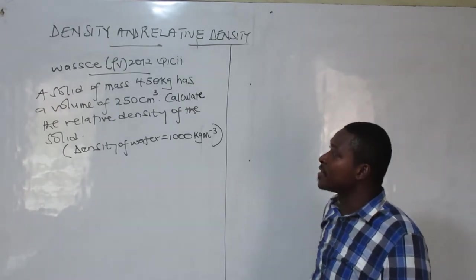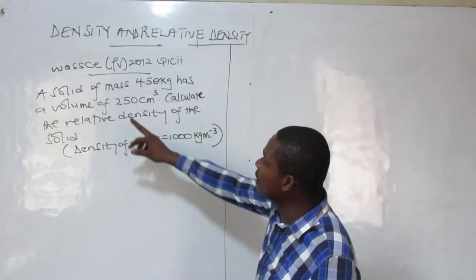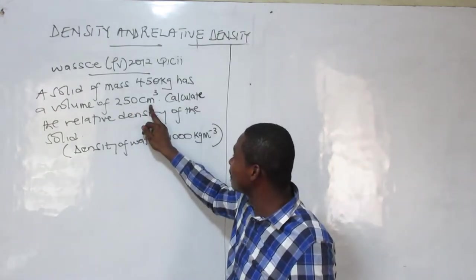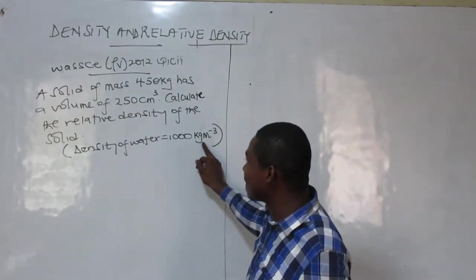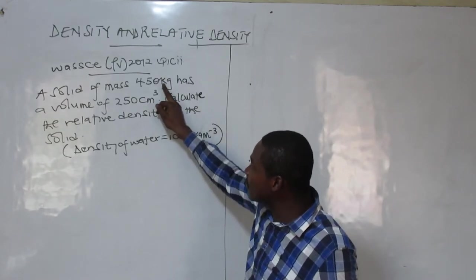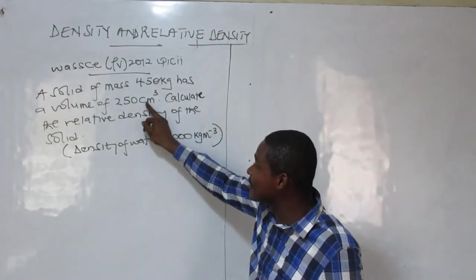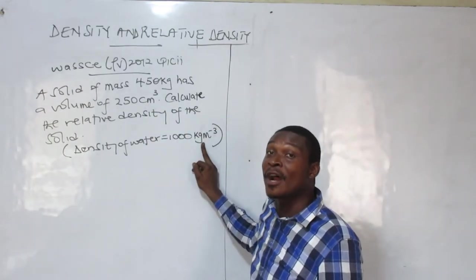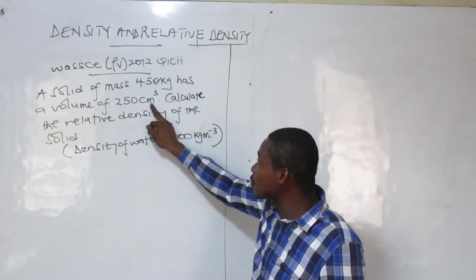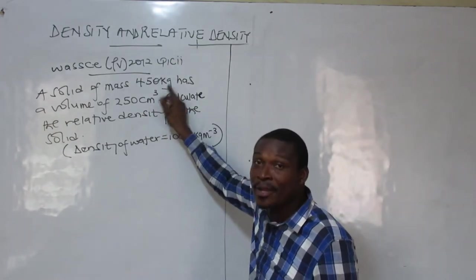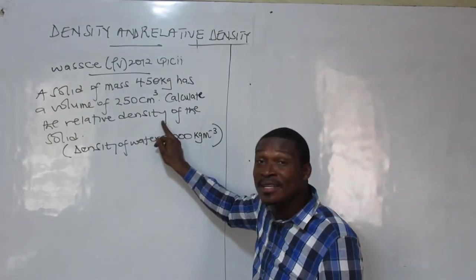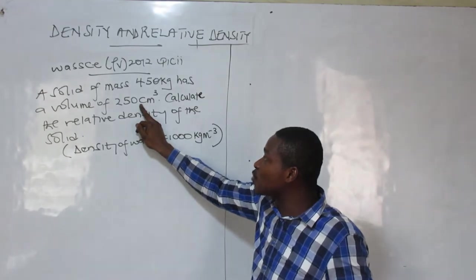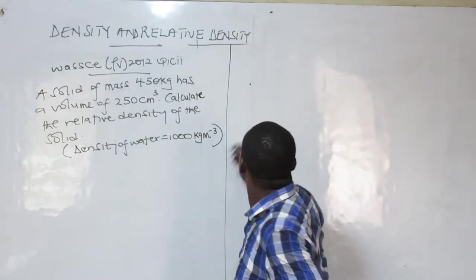Now let's look at this next question on relative density. Here the mass is given in kilograms — that is standard — but the volume is given in cm³, which is not standard. The density of water is given in standard units, so if I try to use cm³ I will end up with kg per cm³, which will not cancel correctly. So I need to convert the volume to m³ to make everything standard; otherwise my relative density will carry a unit, which it should not.